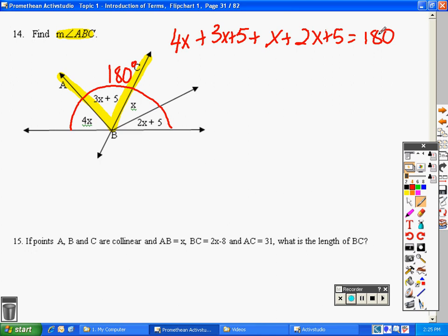Alright, now I just have to combine all my like terms. My like terms all have X's. 4X plus 3X is 7X, plus another X is 8X, plus 2 more is 10X, plus all my numbers, that's 5, and another 5 is 10, equals 180.